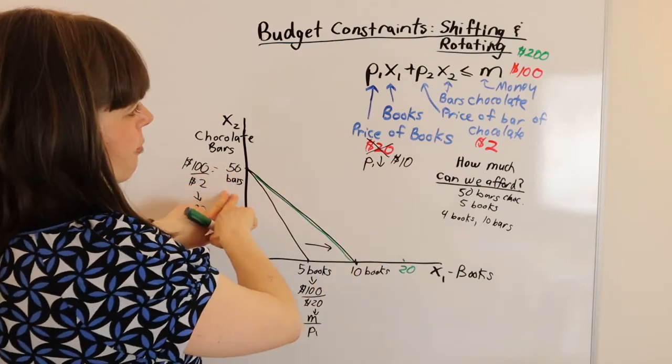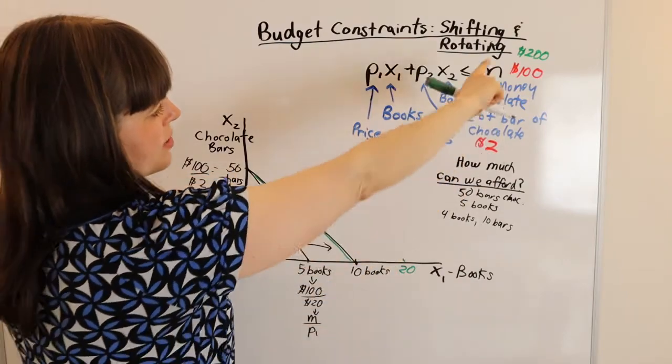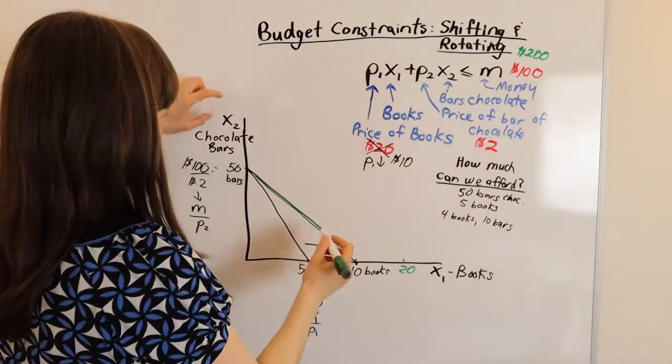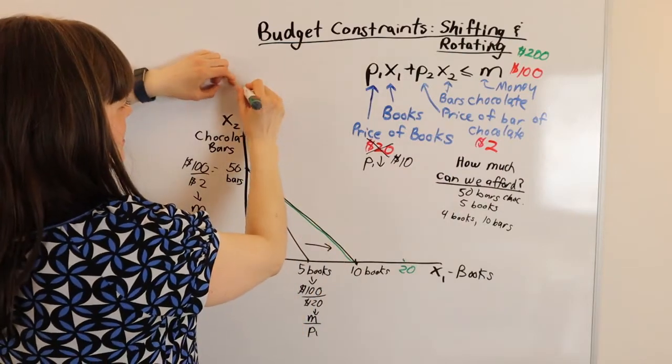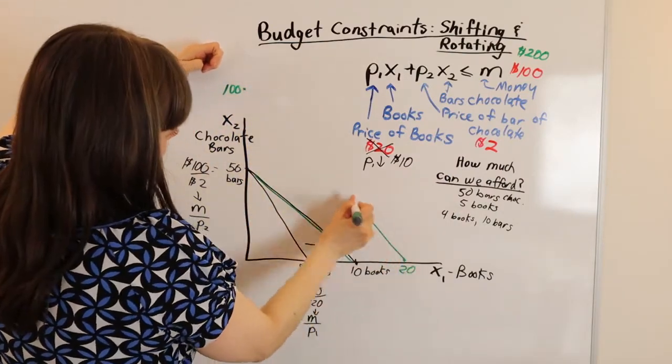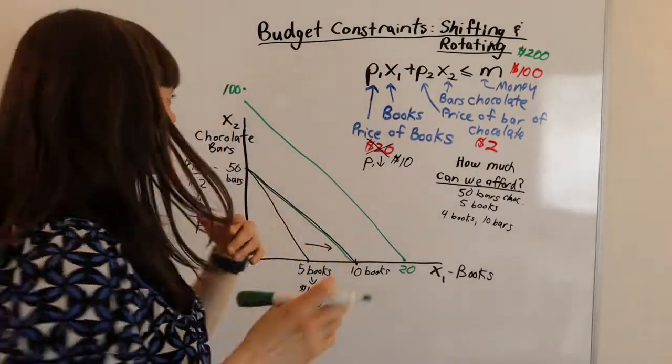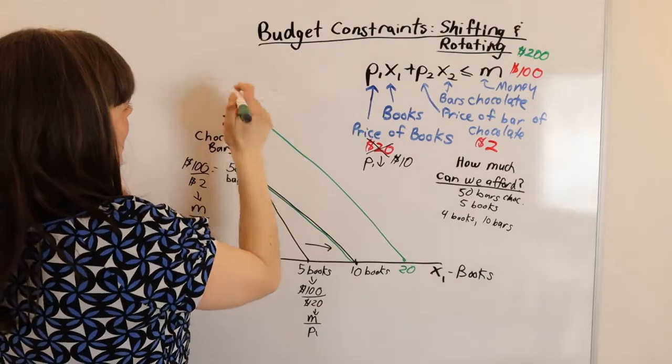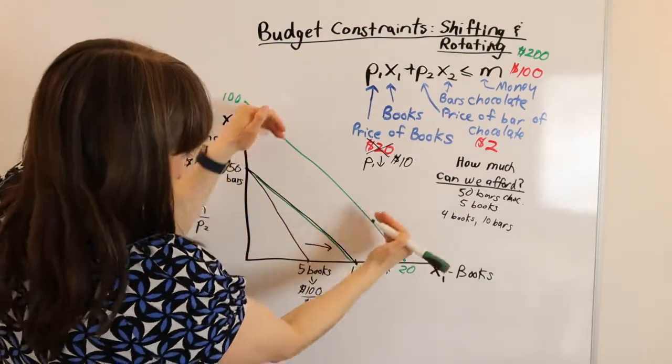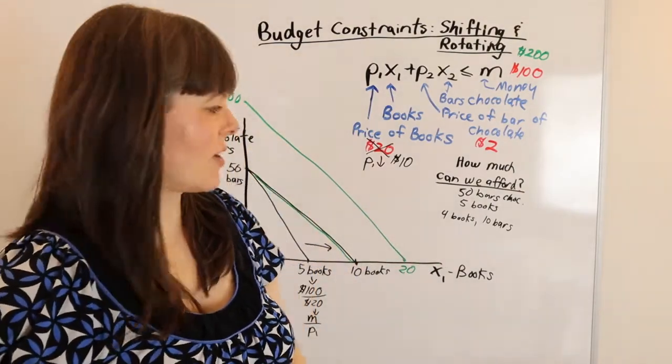And we used to be able to afford 50 bars of chocolate. Now with $200, we can afford 100 bars of chocolate. And so when we draw that, if we've drawn things properly to scale, which I have not, that should lead to a shift out in the budget constraint.